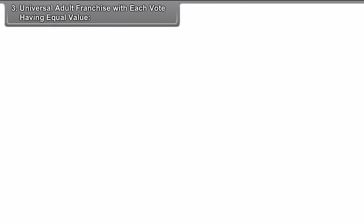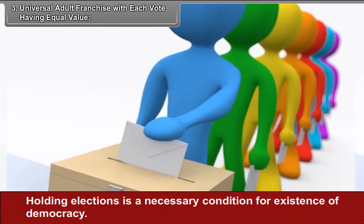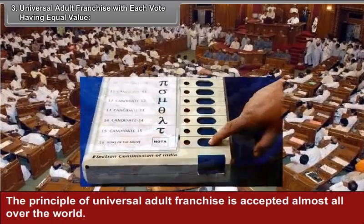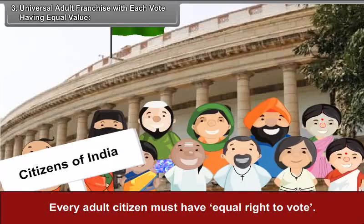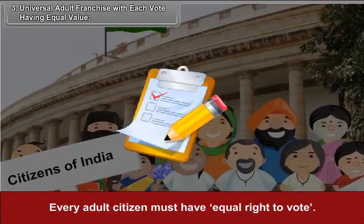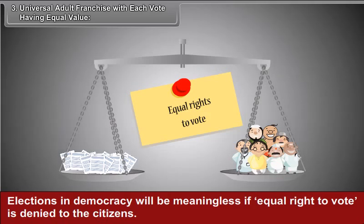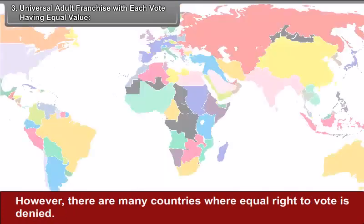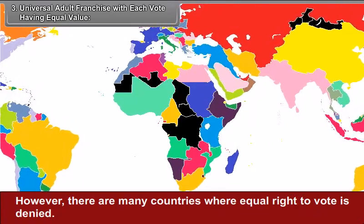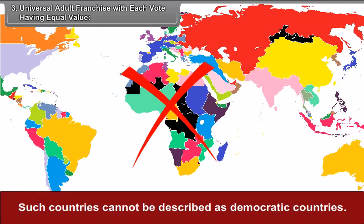The third feature is universal adult franchise with each vote having equal value. Holding elections is a necessary condition for the existence of democracy. The principle of universal adult franchise is accepted almost all over the world. Every adult citizen must have an equal right to vote. Elections in democracy will be meaningless if equal right to vote is denied. Democracy is based on a fundamental principle of political equality. However, there are many countries where equal right to vote is denied, and such countries cannot be described as democratic.